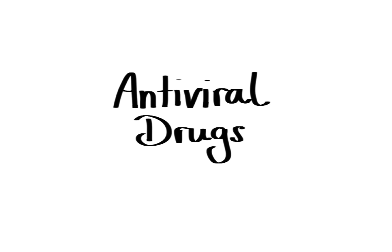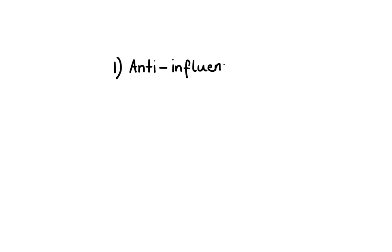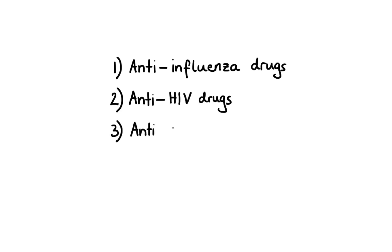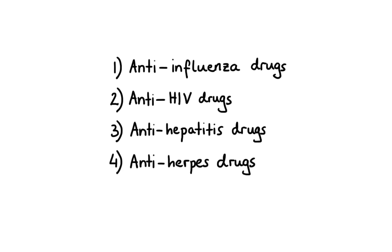Antivirals are a large and diverse group of agents that are typically classified by the virus infections for which they are used. For simplicity, we can divide them into four groups: number one, anti-influenza drugs; number two, anti-HIV drugs; number three, anti-hepatitis drugs; and number four, anti-herpes drugs. Now let's discuss these one by one starting with anti-influenza drugs.